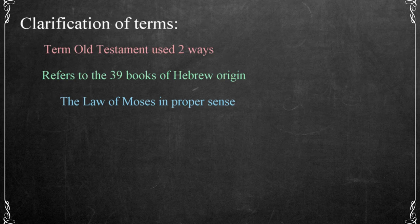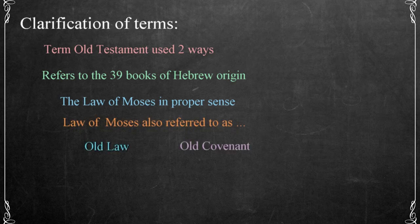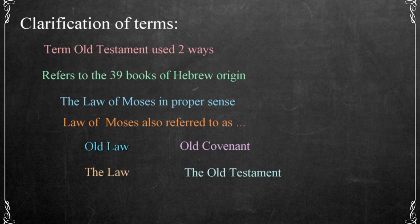The Law of Moses can be referred to as the Old Testament in a proper sense. It is also referred to as the Old Law, the Old Covenant, the Law, and the Old Testament. Each of these terms is correct, but can be confusing for those not familiar with the Scriptures. In these lessons, I'll refer to the Law of Moses as the Law, and the 39 books of Hebrew origin as the Old Testament.